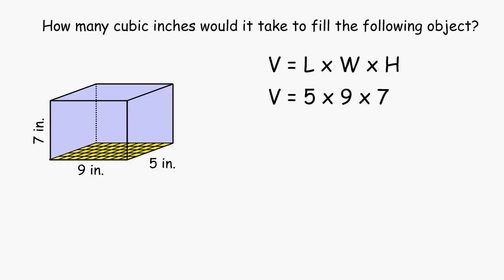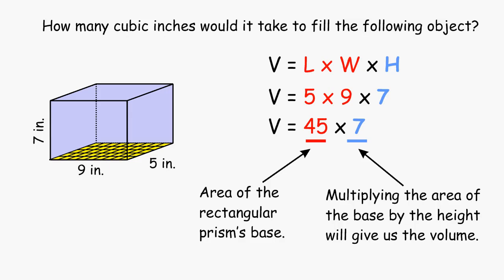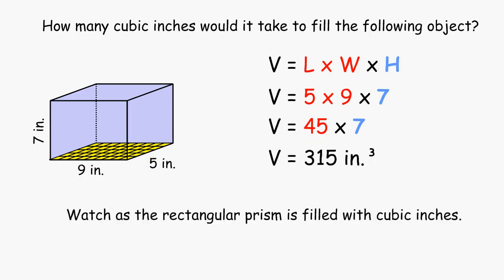So in this case, by multiplying 45 by 7, that will tell us how many cubic inches it would take to completely fill the shown rectangular prism. And 45 times 7 is equal to 315 cubic inches.